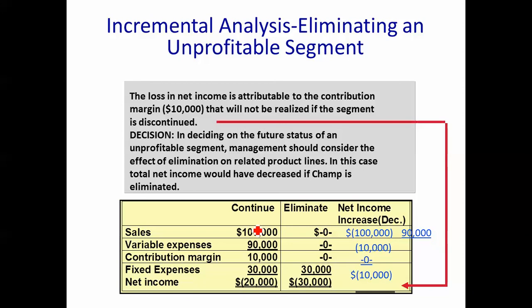The reason here is: no, you don't eliminate Champ, because what we are going to lose is the $10,000 contribution margin towards the fixed cost of this company. We cannot get rid of those fixed costs. Champ was picking up a portion of that fixed cost, at least making a contribution towards covering it. And so that's the end of incremental analysis and eliminating an unprofitable business.